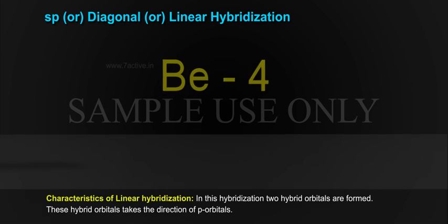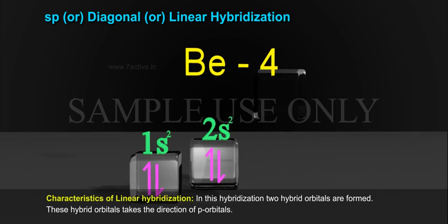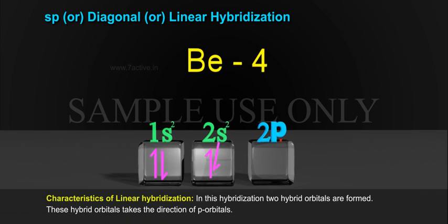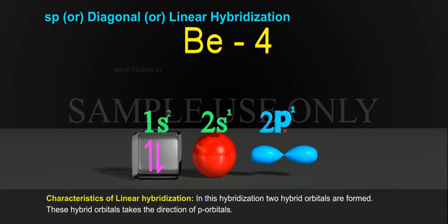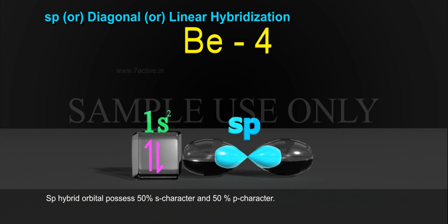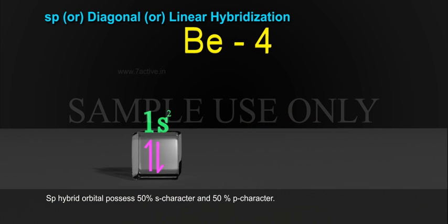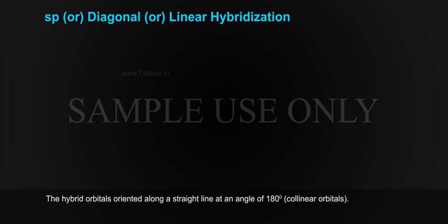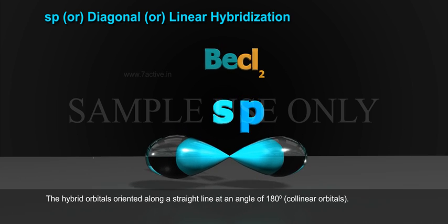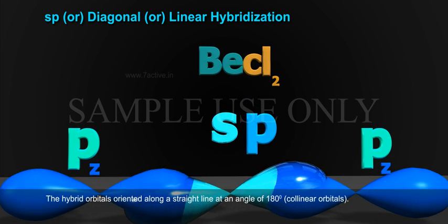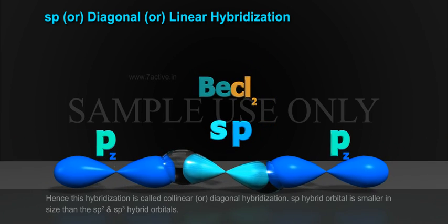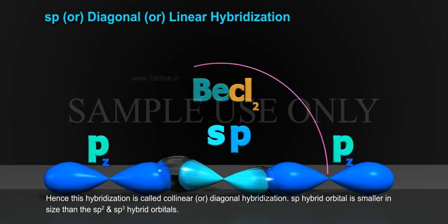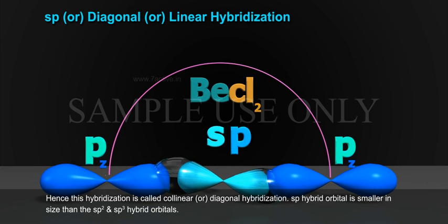Characteristics of Linear Hybridization: In this hybridization, two hybrid orbitals are formed. These hybrid orbitals take the direction of P orbitals. SP hybrid orbitals possess 50% S character and 50% P character. The hybrid orbitals are oriented along a straight line at an angle of 180 degrees — hence called colinear orbitals.